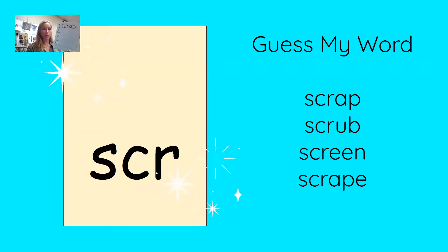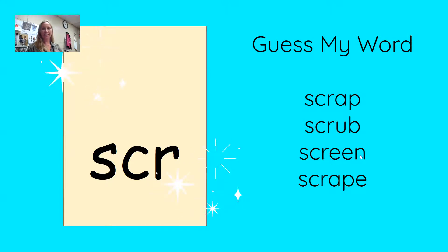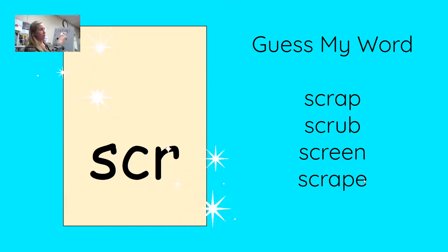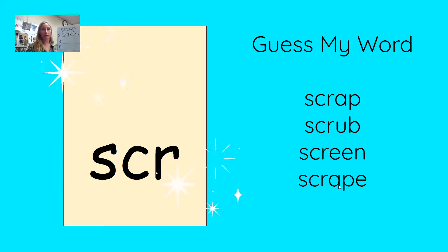Here is clue number one: my word has a long vowel sound. Let's take a look at the words — scrap, scrub, screen, scrape. Only two of our words have long vowel sounds: screen and scrape. So scrap is a wrong choice. I'm going to choose screen. You choose either screen or scrape, because my word has a long vowel sound.